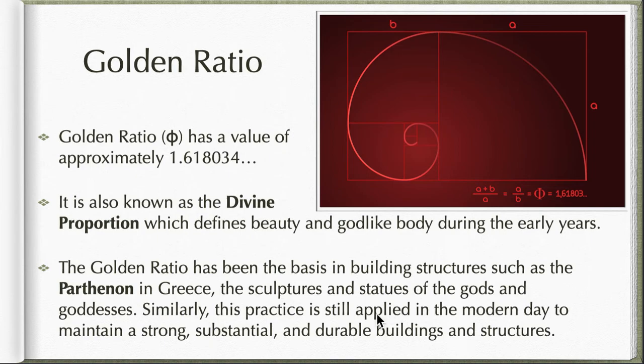Similarly this practice is still applied in the modern day to maintain strong, substantial, and durable buildings and structures. Even in cameras, one of the grid lines I believe you can format before you take a picture - you put a grid on your camera lens or maybe on your smartphones. One of the choices is the golden ratio so that you will be guided with that. Actually a lot of modern day logos are based on the golden ratio, you know, the Apple logo, the Twitter logo. I'm going to give you examples of that in a later video.